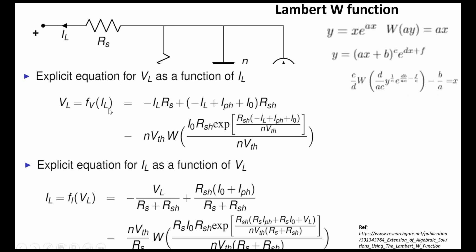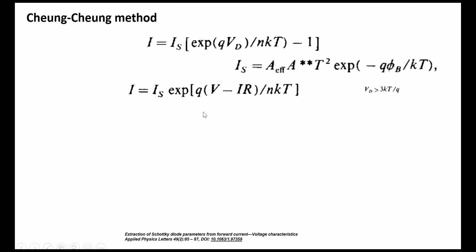Using the Lambert W function, V_L can be written as a function of I_L with all I_L terms on one side, and similarly I_L as a function of V_L. To utilize this in practice, we use Python or advanced versions of Origin software where the Lambert W function is available. This allows us to extract Rs, Rsh, and ideality factor n directly from the IV curve. Three methods are thus available: Lambert W function, Cheung method, and differential resistance method.